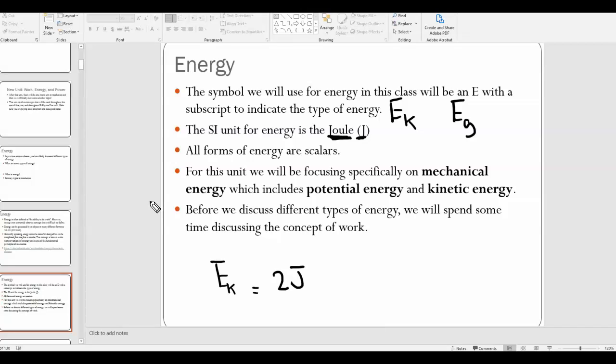Now, all forms of energy are scalars, which is very nice because, as we know, vectors are kind of more annoying to deal with. So, we don't necessarily have to deal with vector addition in this unit, but we are going to kind of sort of have to deal with vectors, as we'll see in the next video. Okay, but energy itself is always a scalar, meaning it has magnitude but not direction. Okay, so we're mainly going to be focused on mechanical energy in this unit, which includes different types of potential energies, and then kinetic energy. Okay, and then in the next video, we'll talk more about work.